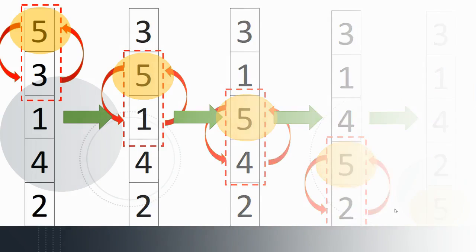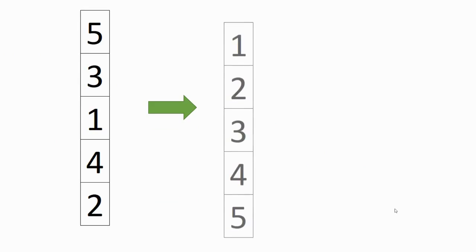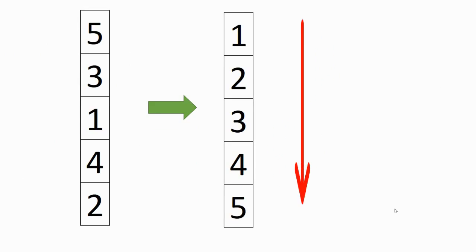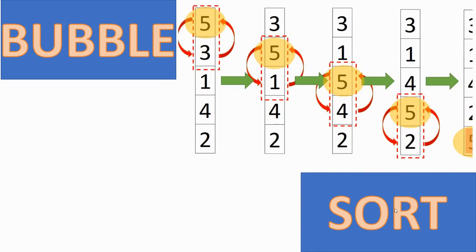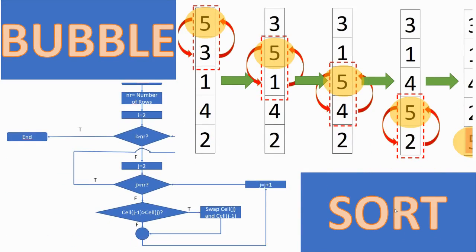Hi there! Today we will create a VBA code to sort items in ascending order. To do this we will use the bubble sort. The bubble sort is probably the most fun sorting algorithm. There are a lot of mutations from it, but this one is good to start as the first algorithm that you learn. So let's start.